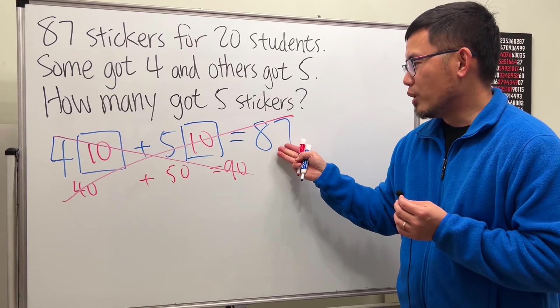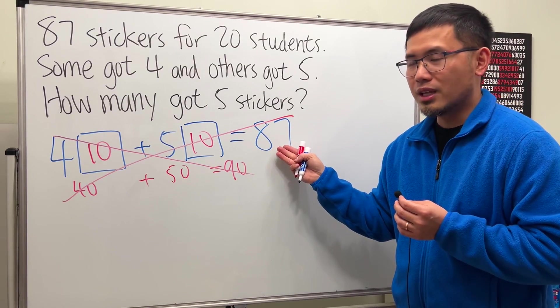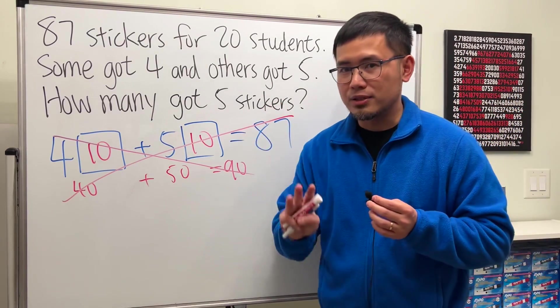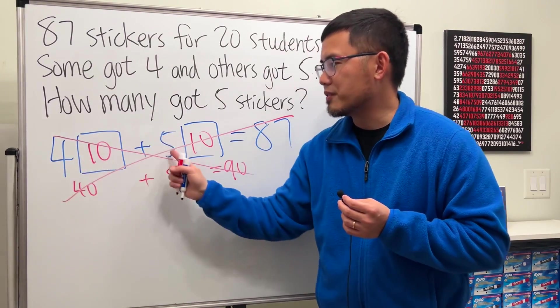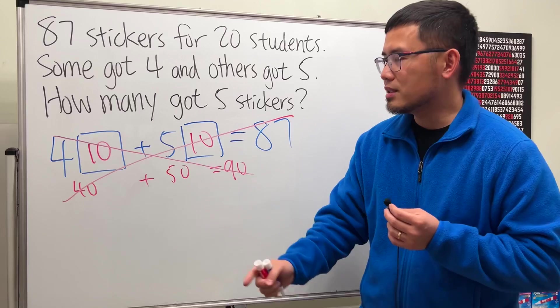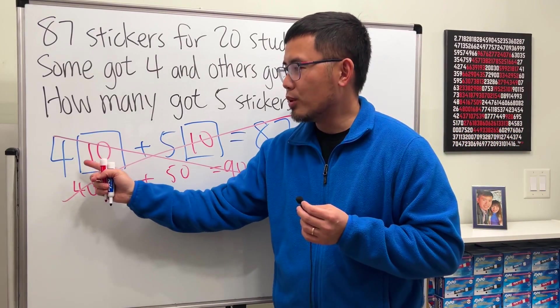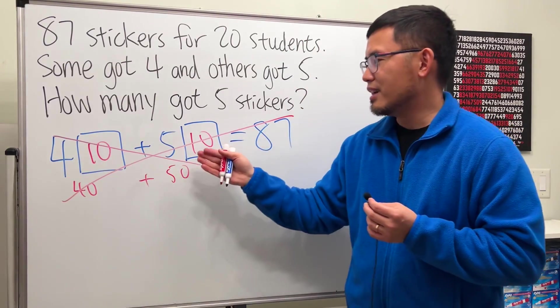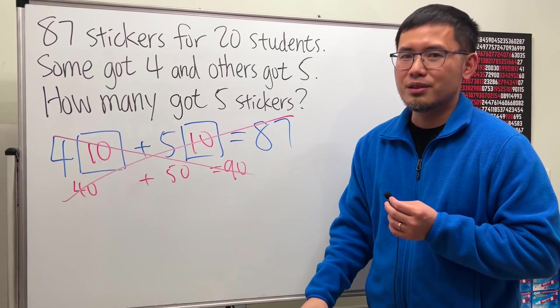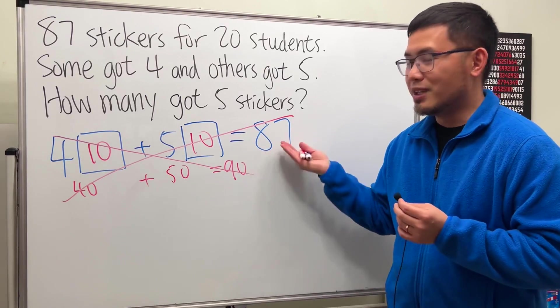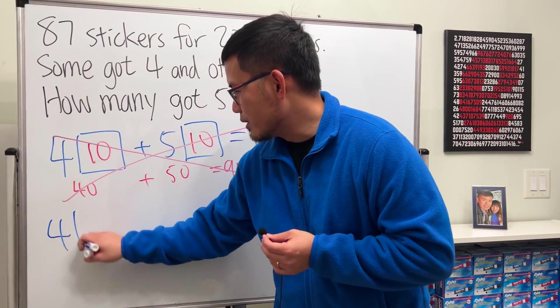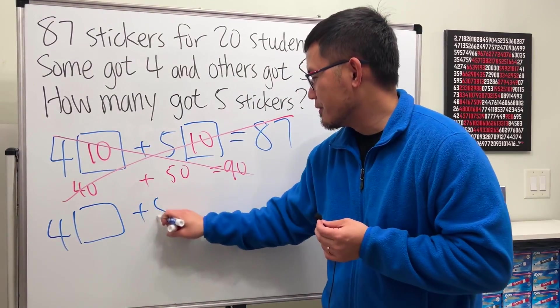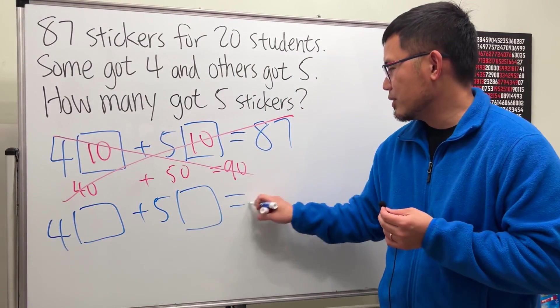This is only three away from 87, right? So that means we should somehow reduce by three. And check this out: the difference between four and five is one. That means we should have three more people receiving four stickers and then three less people receive five stickers. That will produce the three less in total. That's pretty much it.